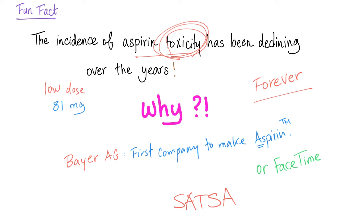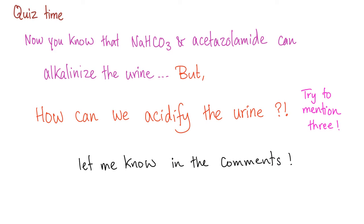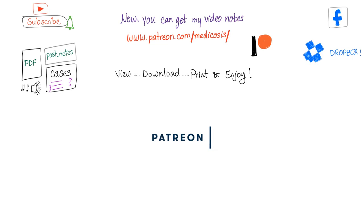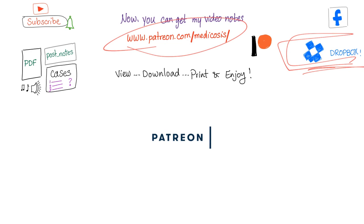I give you the same advice grandma gives you, except I keep my teeth in. Thank you for watching. Quiz time: now you know that sodium bicarbonate and acetazolamide can alkalinize the urine — how can we acidify the urine? Try to mention three things and let me know in the comments. Check the PDF on patreon.com/medicosis for more on aspirin. Please subscribe and hit the bell. As always, be safe, stay happy, and study hard. This is Medicosis Perfectionist, where medicine makes perfect sense.